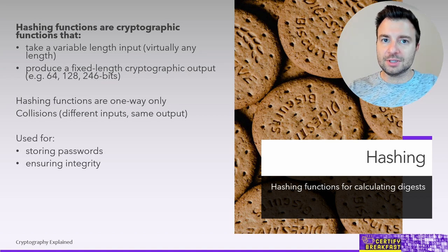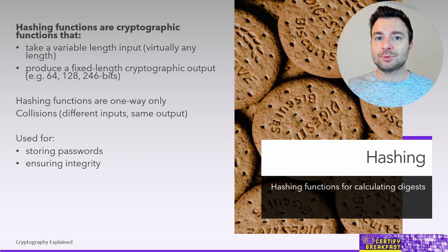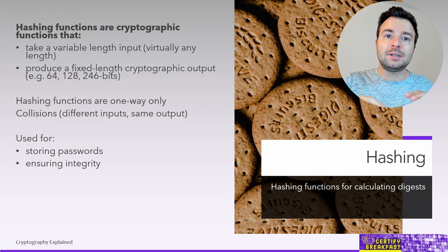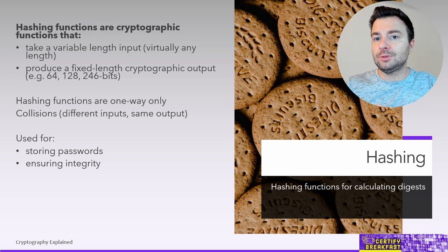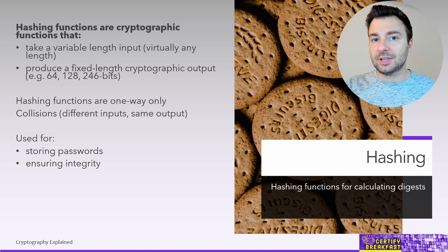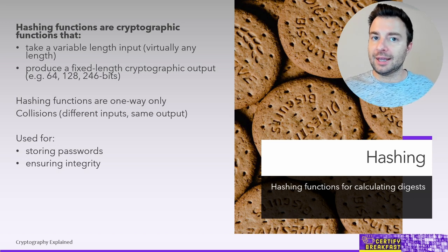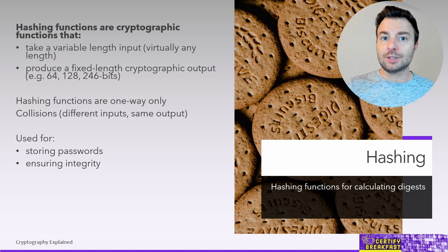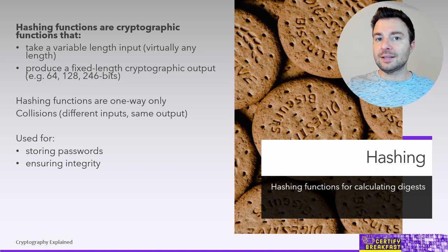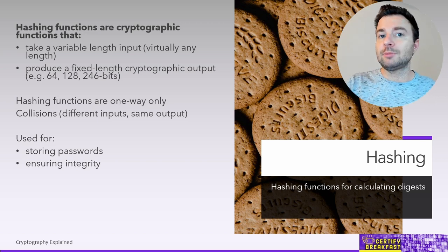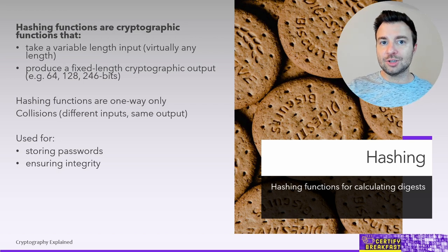Another use case for hashing functions is storing passwords. We should never store passwords in clear text — or actually we should never store passwords at all, whether obfuscated, encrypted, or in any form. For a web application with user accounts, what you should do is store a hash of the user's password. The hash is always fixed-length and non-reversible, which means that if your web application is breached and your user database gets compromised, at least the passwords won't be compromised because you're only storing the hashes, not the passwords themselves.